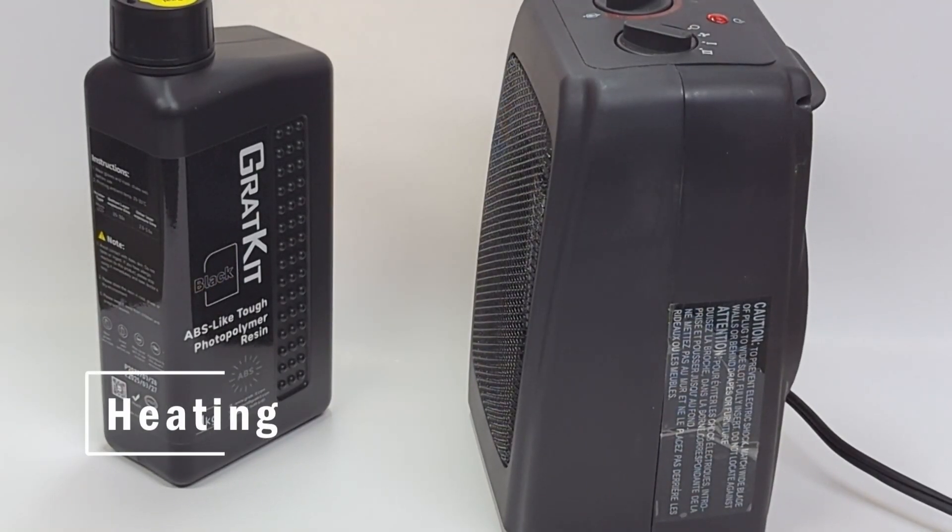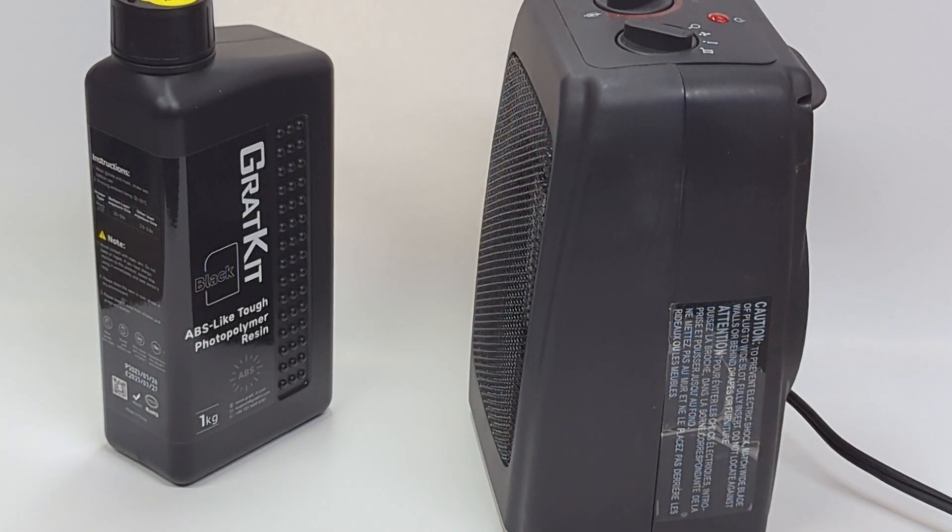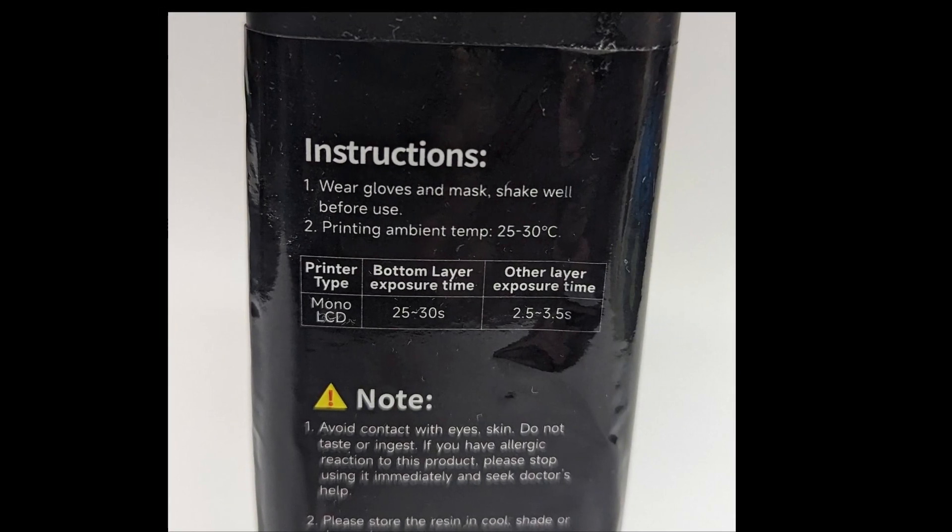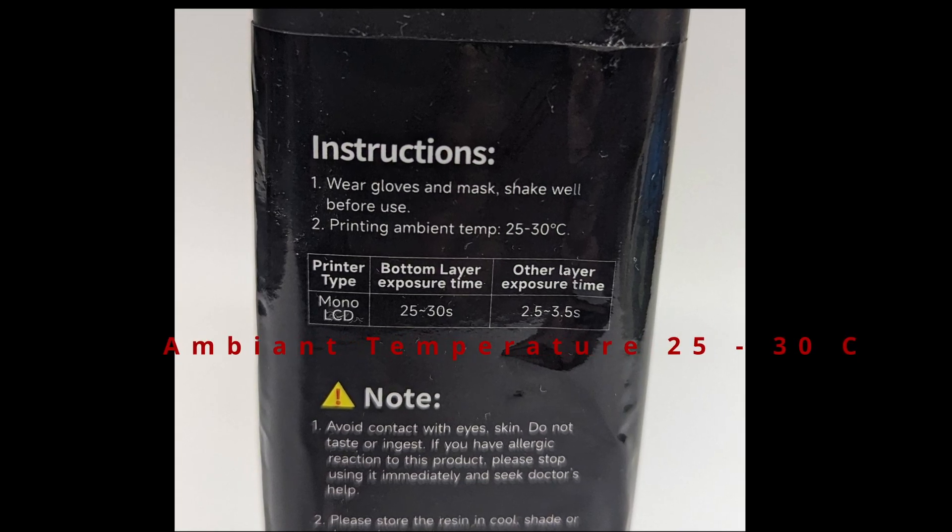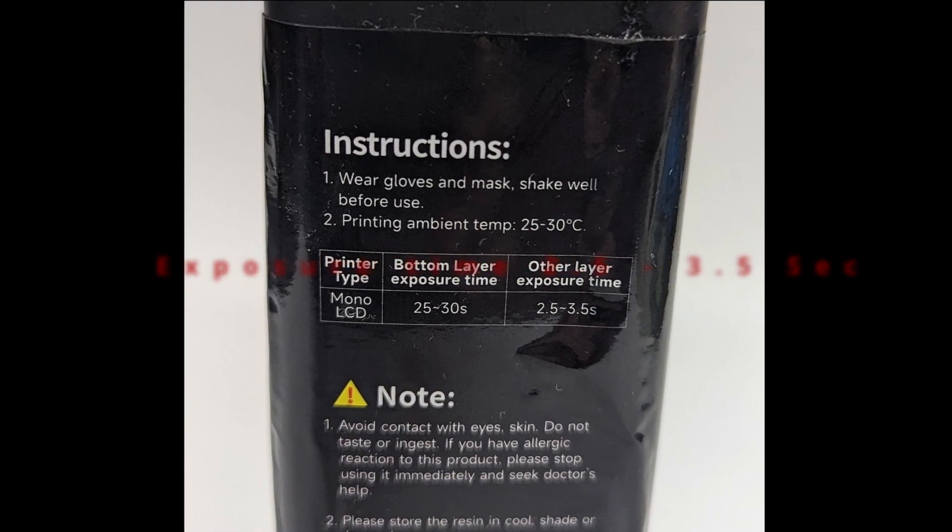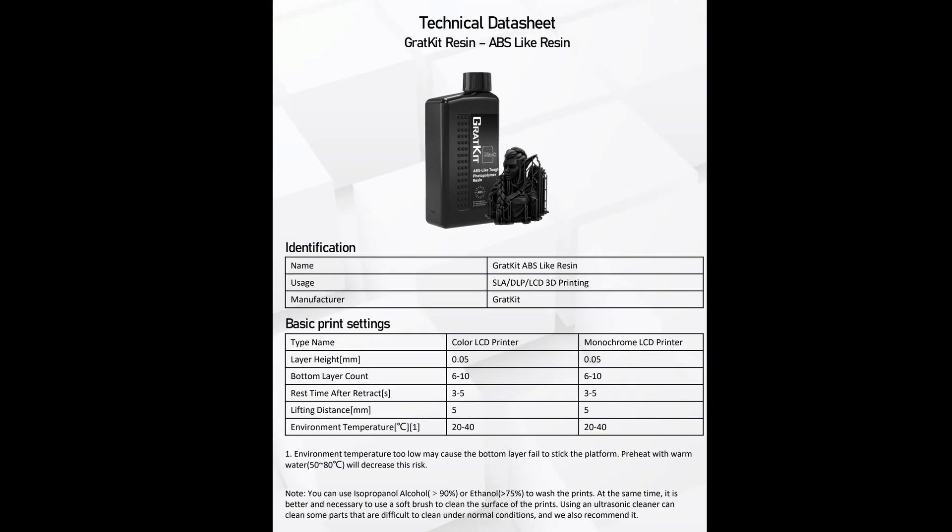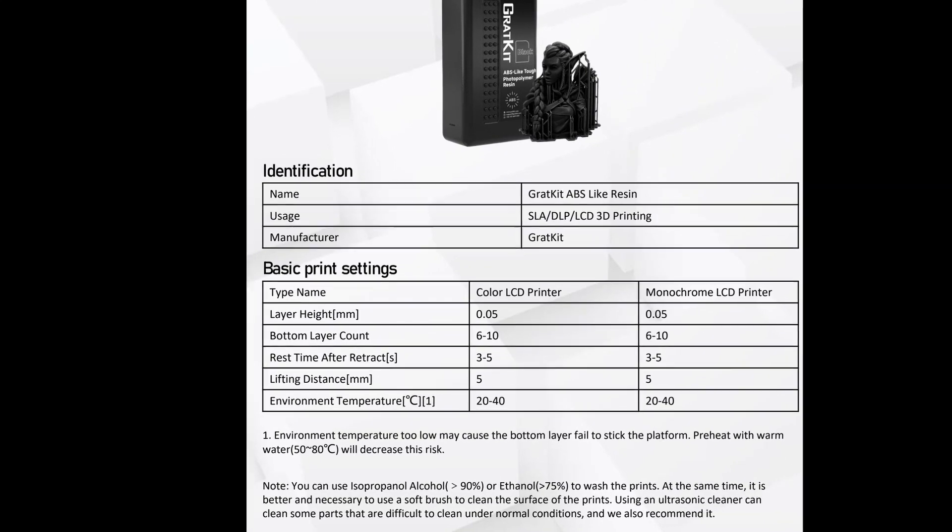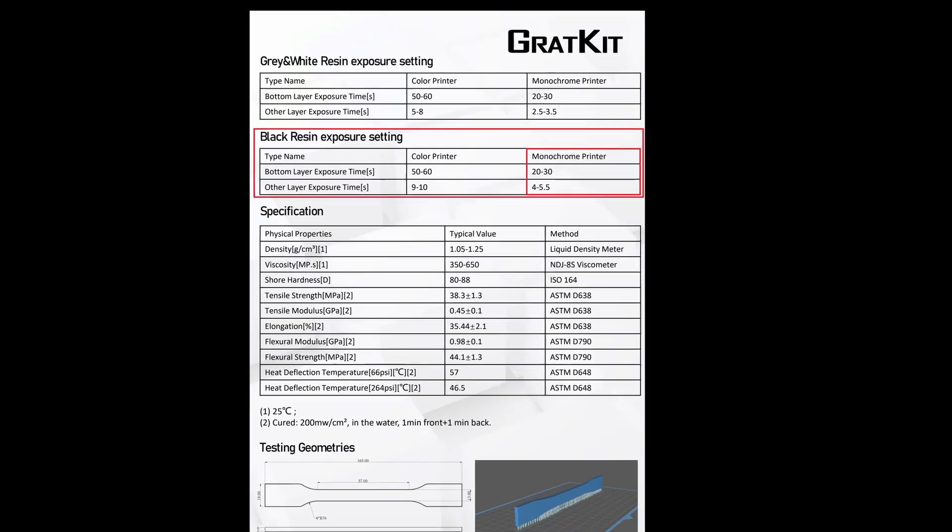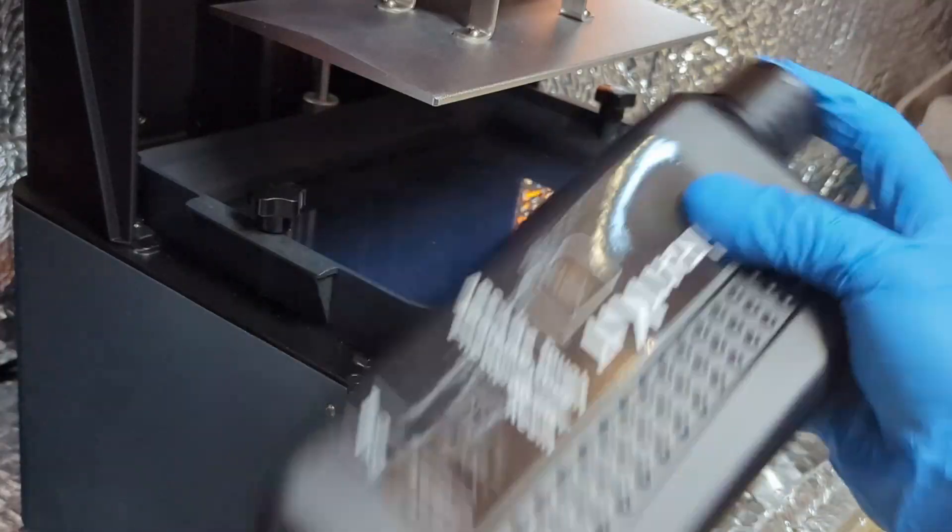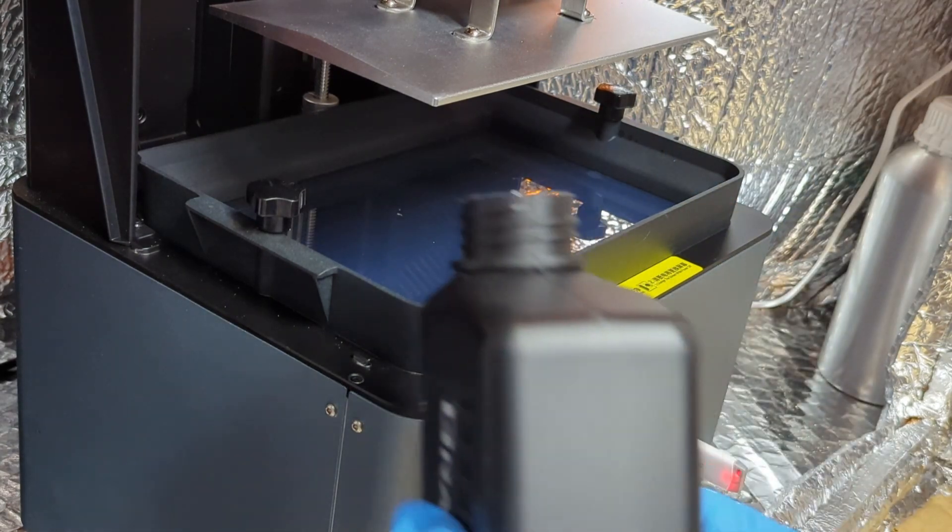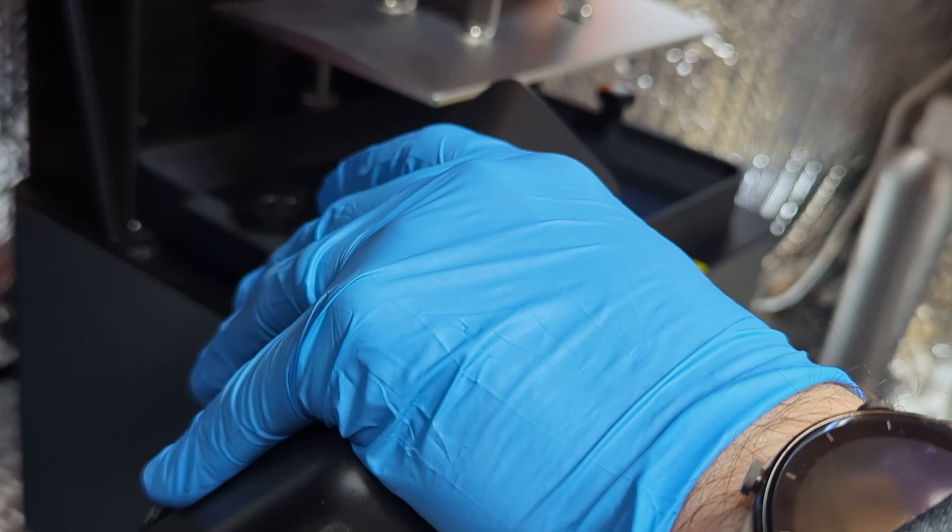Alright, let's test the resin and follow the instructions of the manufacturer. Yeah, let's talk about it. We can see on the bottle that Gradkit recommends an ambient temperature between 25 and 30 degrees Celsius and an exposure time between 2.5 and 2.5 seconds. And when you look at the technical datasheet, it recommends an ambient temperature between 20 and 40 Celsius, an exposure time between 4 and 5.5 seconds. So this is where I got a bit confused. On the technical datasheet, it recommends even at the minimum a higher exposure time than what is recommended on the bottle. So let's run some exposure tests and see how it goes.